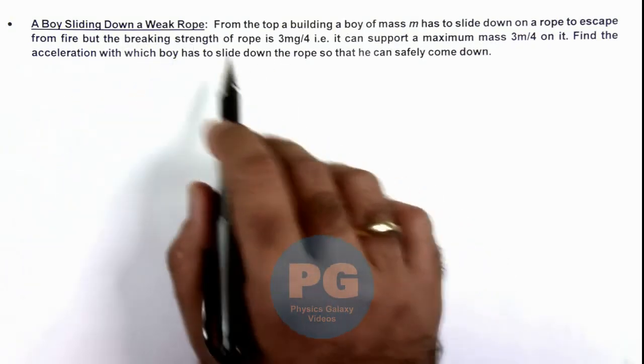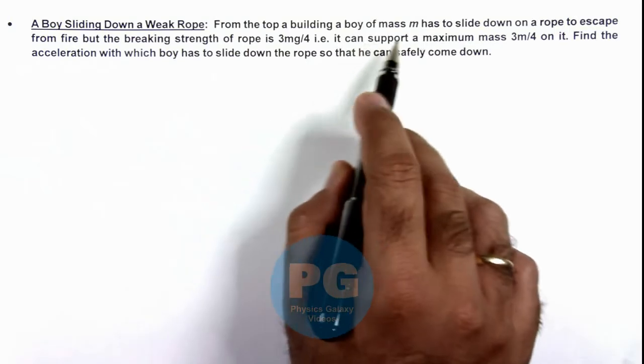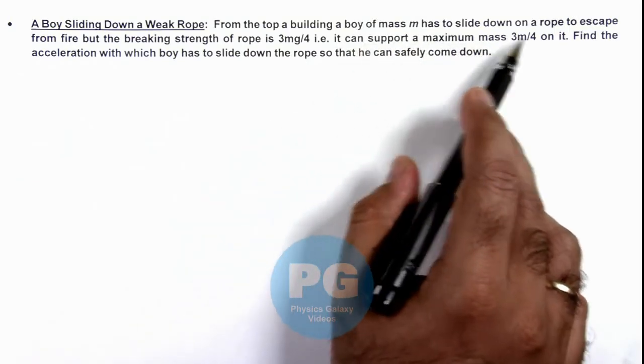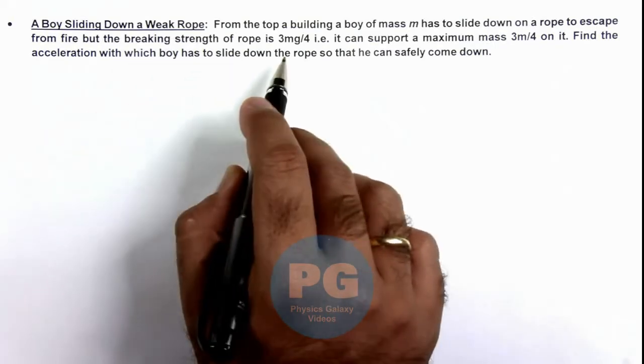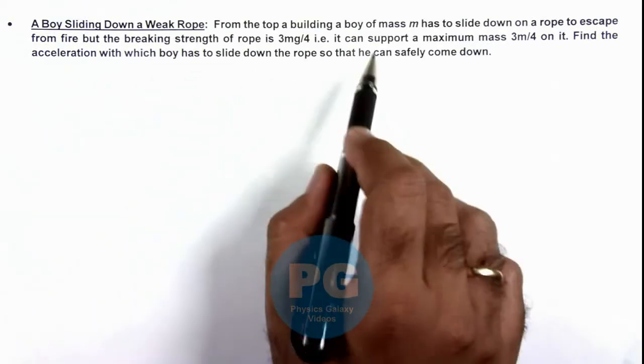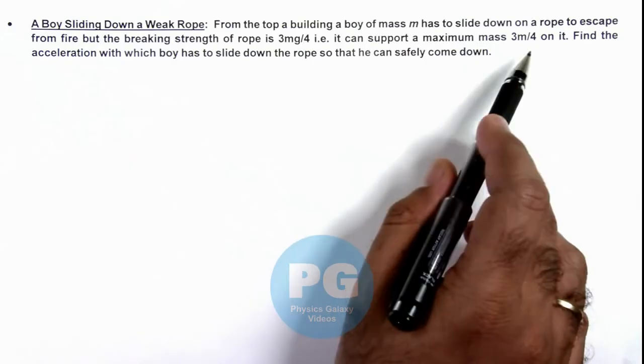We are given that from the top of a building, a boy of mass m has to slide down on a rope to escape from fire, but the breaking strength of rope is 3mg/4. That is, it can support a maximum mass 3m/4 on it.